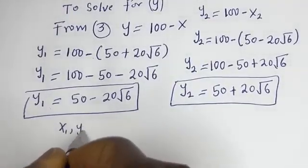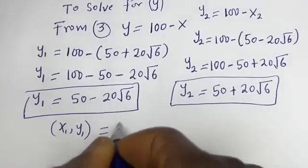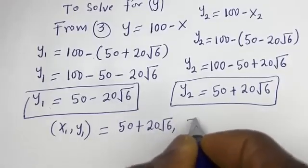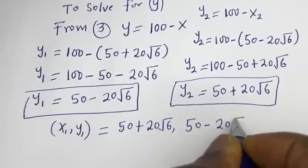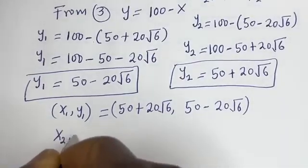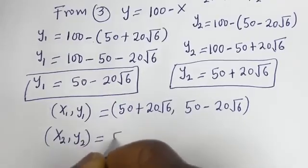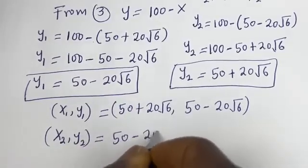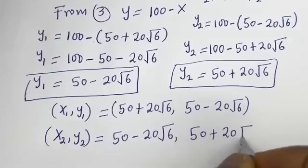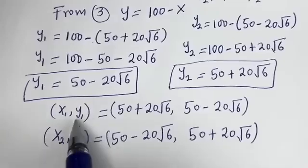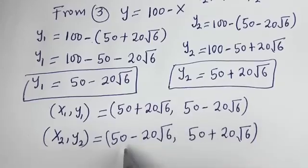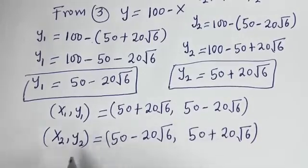Therefore our final answers are: (x1, y1) is equal to (50 plus 20 root 6, 50 minus 20 root 6), and (x2, y2) is equal to (50 minus 20 root 6, 50 plus 20 root 6). You can see that x1 equals the value of y2, and the value of y1 equals the value of x2. Let's check to confirm if this answer is correct.